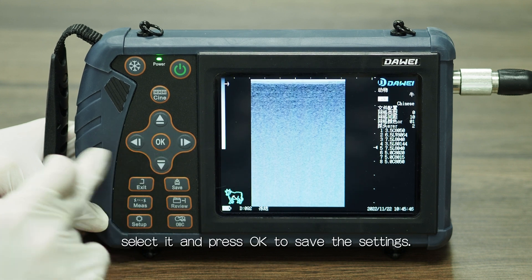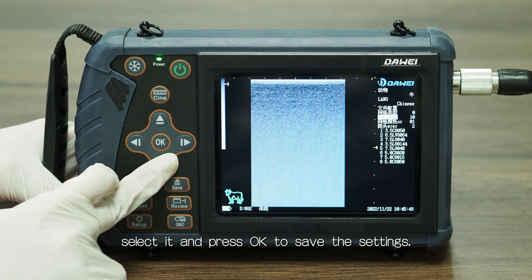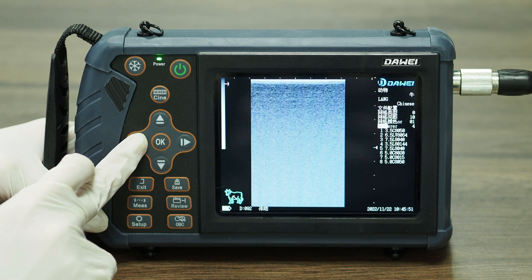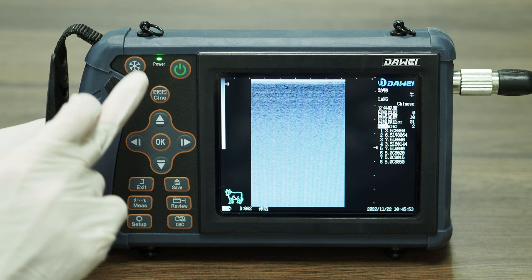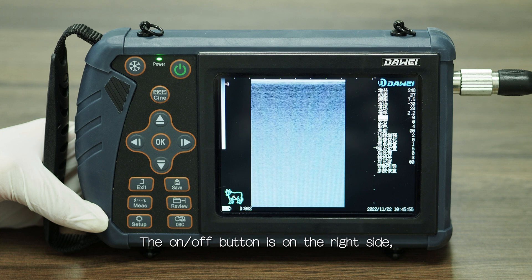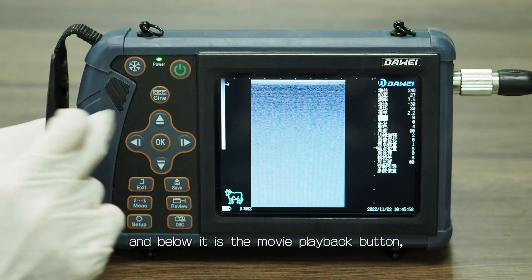Select it and press OK to save the settings. The on/off button is on the right side, and below it is the movie playback button.